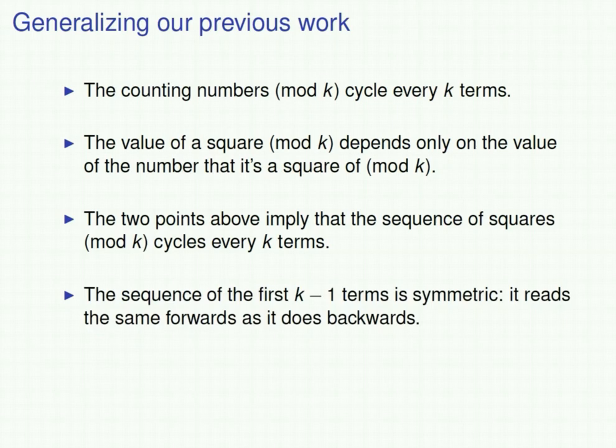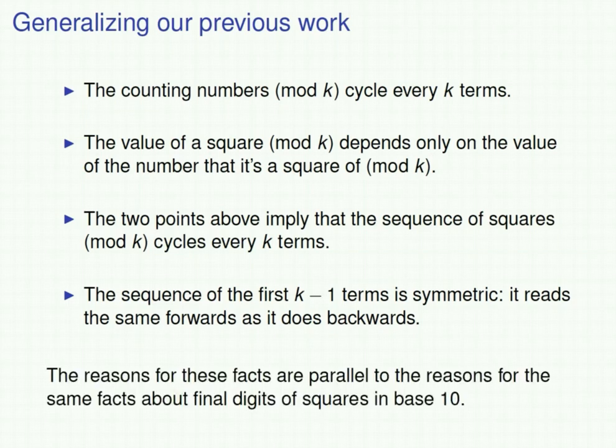Furthermore, if you look at the first k minus 1 terms of the sequence, that sequence is symmetric — it reads the same forwards as it does backwards. We saw that was true of the sequence of final digits of squares, and the reasons why these things are true are parallel to the reasons why the same facts are true about final digits of squares discussed last time.